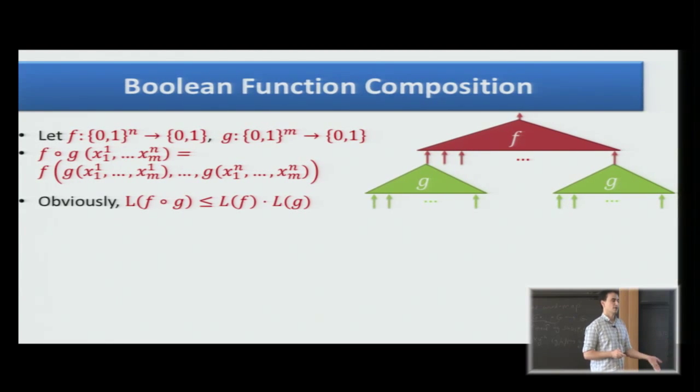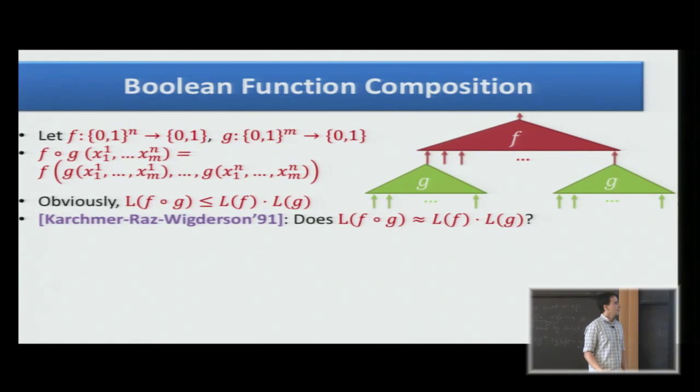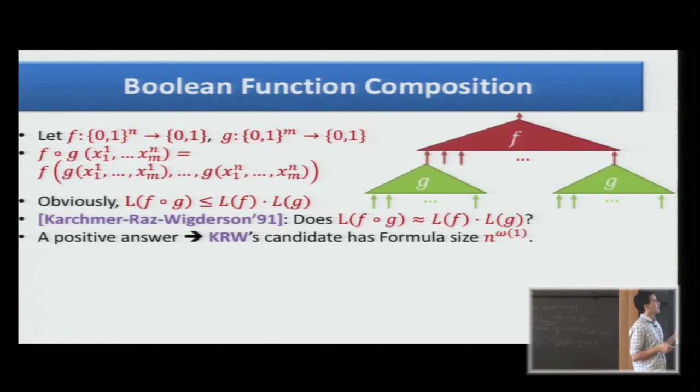The KRW conjecture is that this is roughly the truth, that you cannot do much better than that. This is not really equality. It's like approximate equality because for some functions it's not really equal, but even something very weak here will imply that a candidate that they suggest has formula size super polynomial.